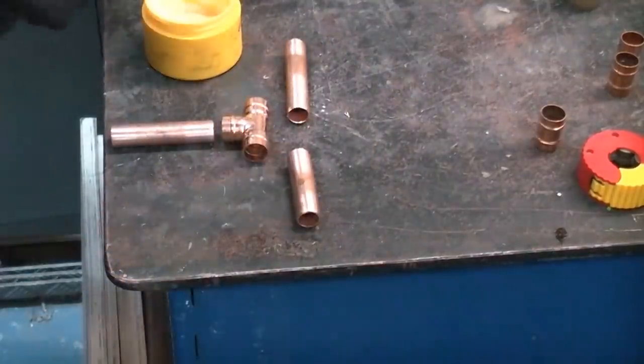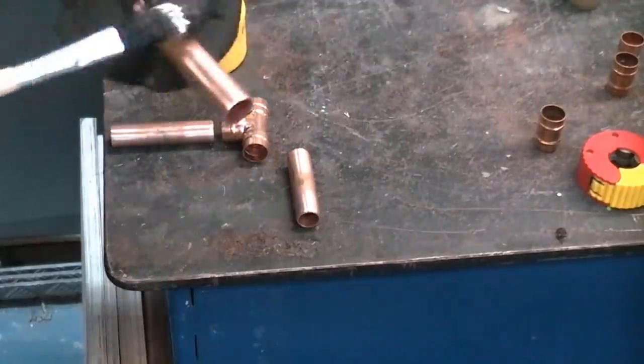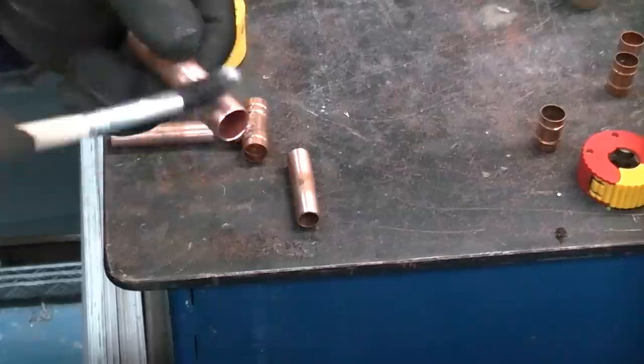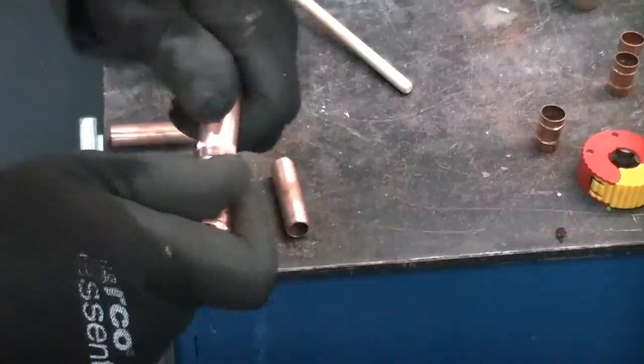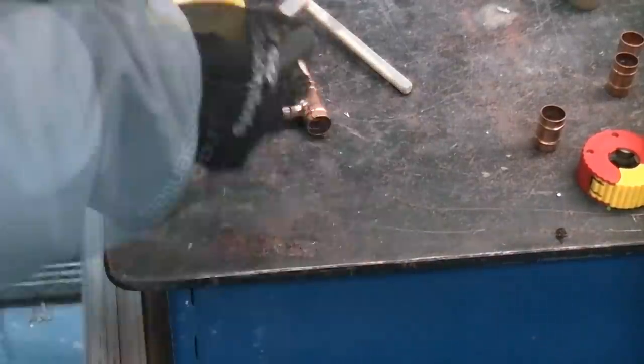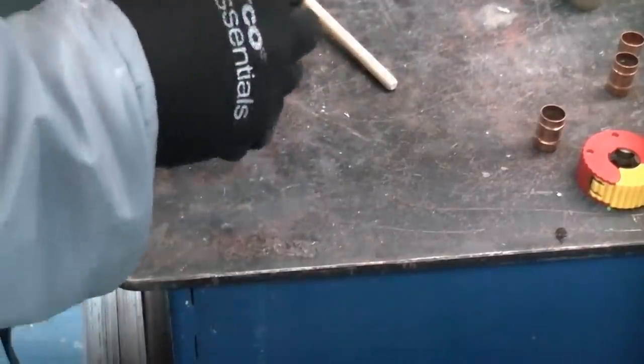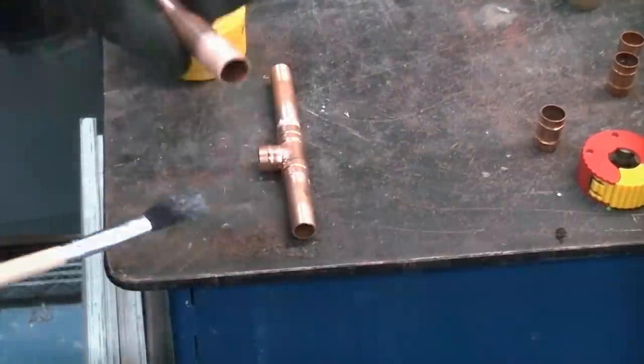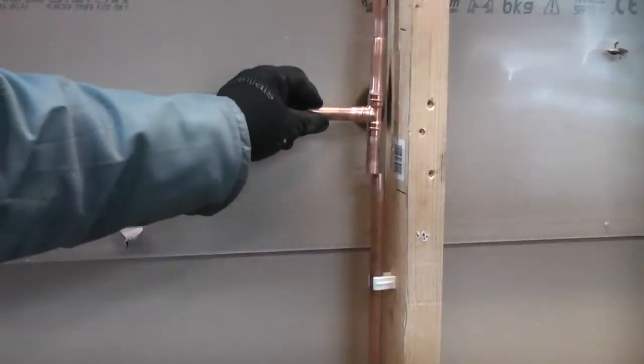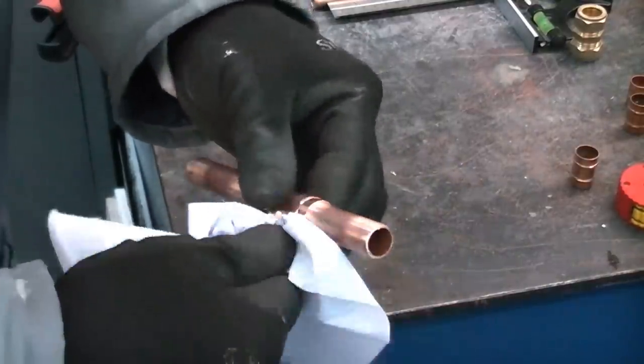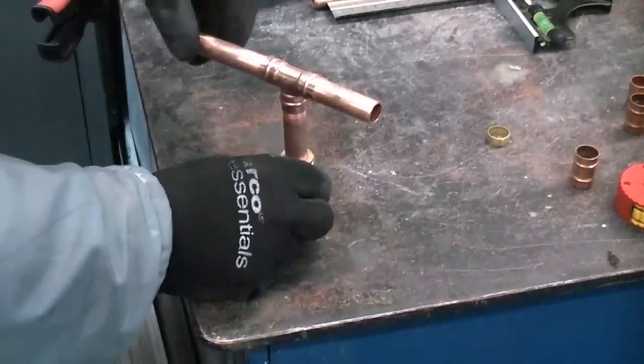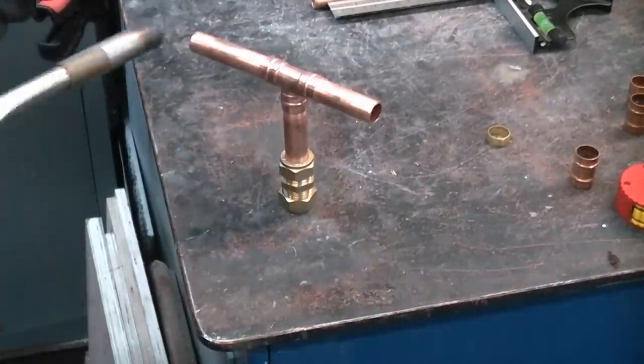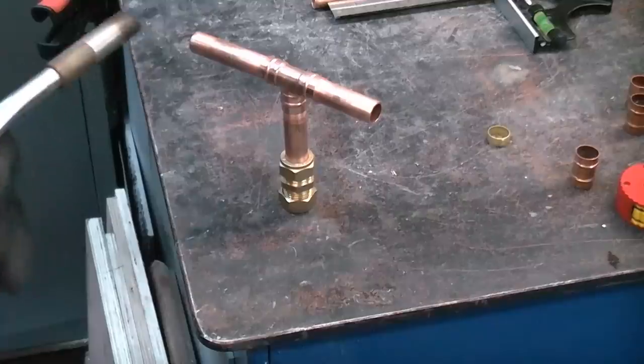I'm then going to take a flux brush and I'm going to apply some flux to each of the pieces of copper. Once we've done that we can then push that into the fitting. We can then just check we've got the pipes the correct way around before we solder it. I'm now just going to use a paper towel to wipe off any of the excess flux. I'm then just going to stand that up in a fitting just so that we can solder it. I'm now just going to apply some heat to that until the solder exits from the fitting.